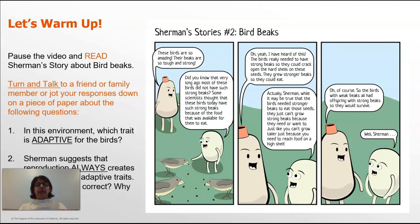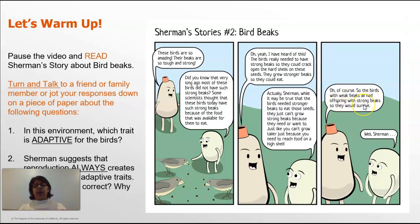The trait that is adaptive for these birds — that is, the one that helps them survive — is their strong and tough beaks. That's because their strong and tough beaks allow them to eat the food that is available in their environment. Now, in terms of reproduction always creating individuals with adaptive traits, I'm not quite sure that the birds with weak beaks all had offspring with strong beaks so that they would survive. I feel like we need more evidence to see if Sherman is correct.